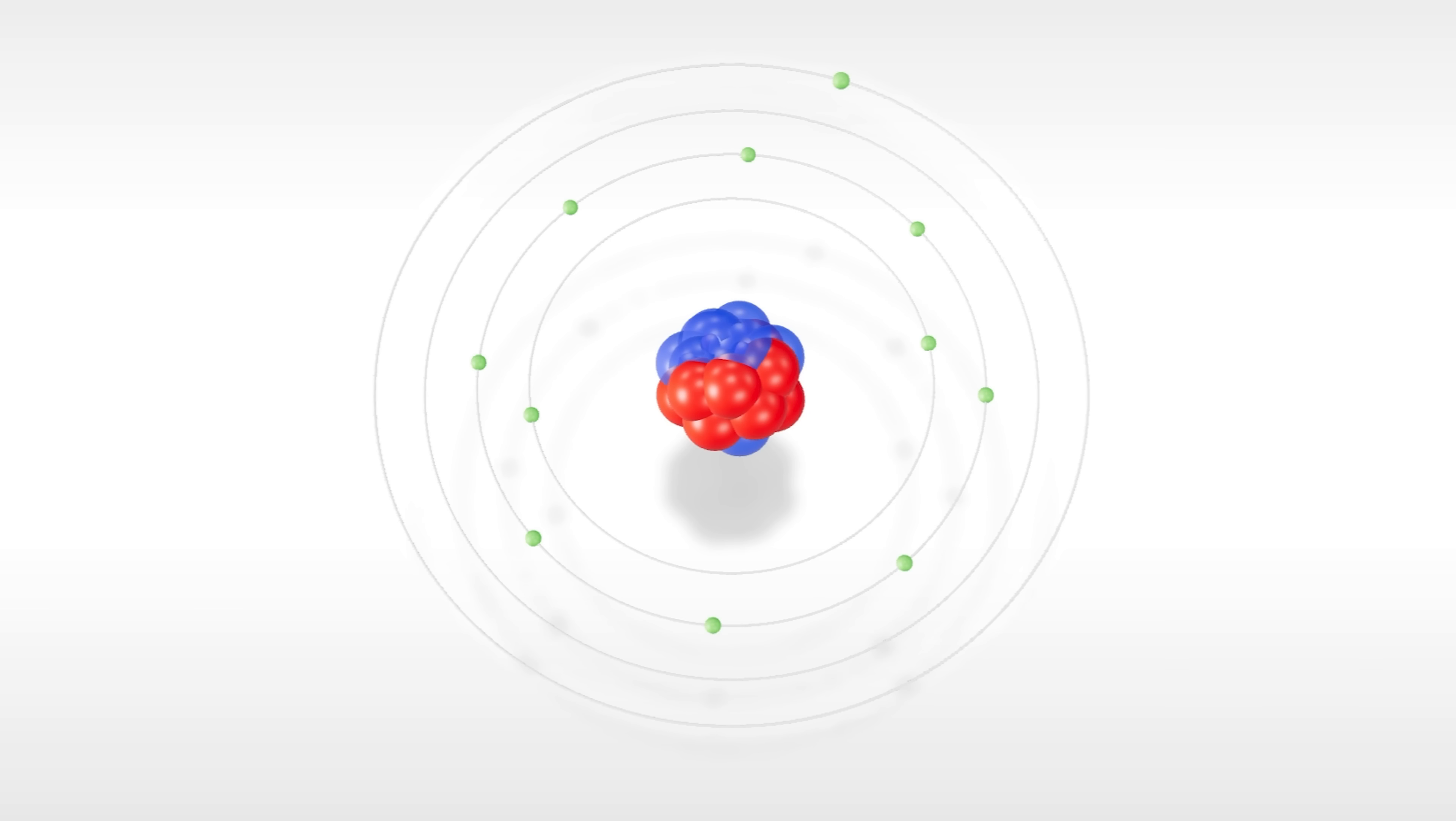So an atom of sodium emits a very specific color of photon when an electron drops from the 3p orbital to the 3s orbital. But the opposite also happens. If you can hit a sodium atom with a photon that has just the right energy, the electron will jump from the 3s orbital to the 3p orbital, absorbing that photon. If the photon has too little energy, the sodium atom won't absorb it. But also if it's got too much energy, the sodium atom won't absorb it either.